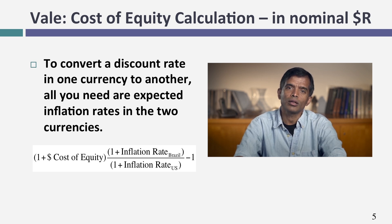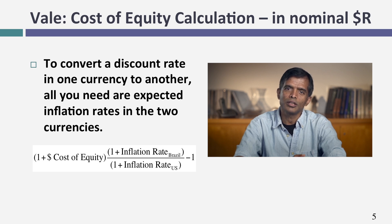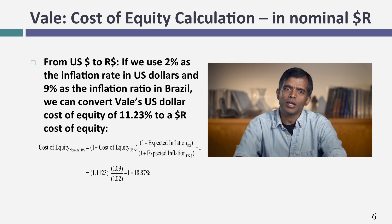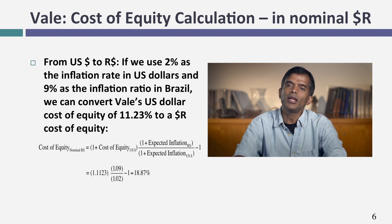Expected inflation in Brazil is more difficult. I had the actual inflation rate from last year, but there are two problems: it's last year's inflation, not an expected number, and it is subject to manipulation by governments. Taking it with a grain of salt, if I assume an inflation rate of about 9%, I take one plus the U.S. dollar cost of equity (11.23%), scale by the ratio of (1 + 9% BRL inflation) to (1 + 2% USD inflation), and end up with an 18.87% nominal real cost of equity.